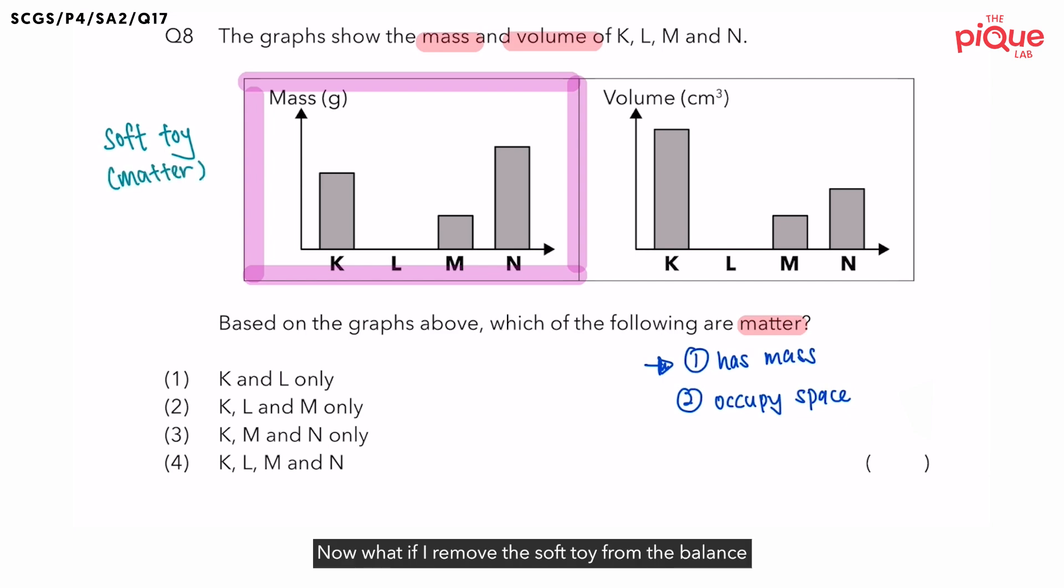Now, what if I remove the soft toy from the balance and I shine light onto the electronic balance? Will there be any reading shown? No. This is because light does not have mass. If light does not have mass, can we call light matter? No. Light in this case is a non-matter.